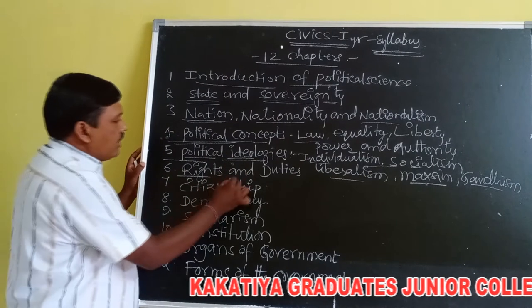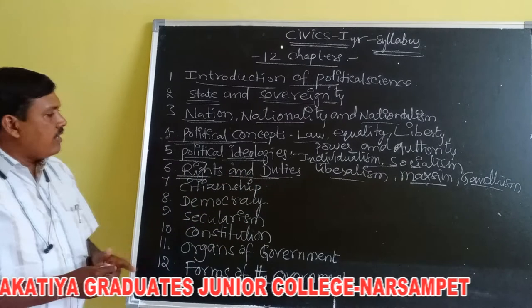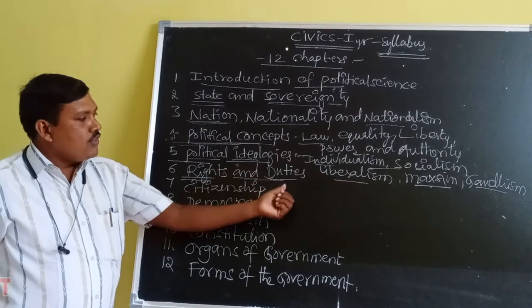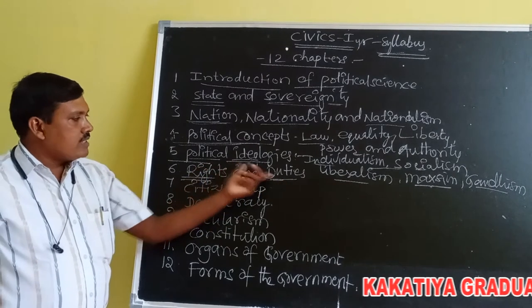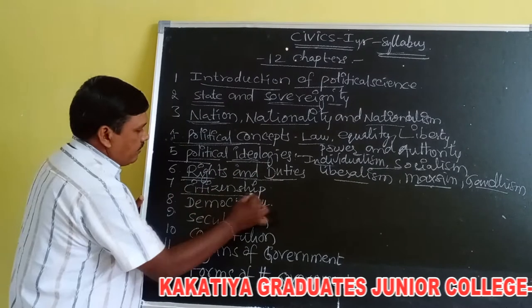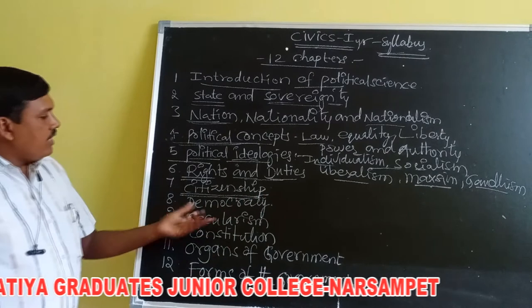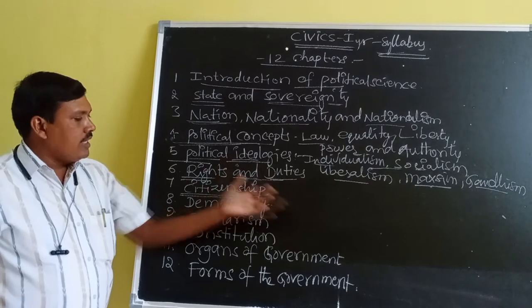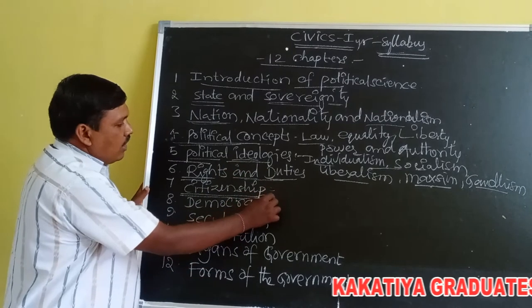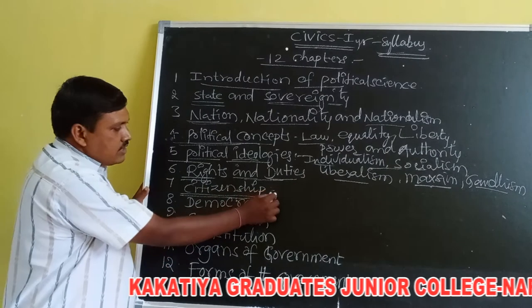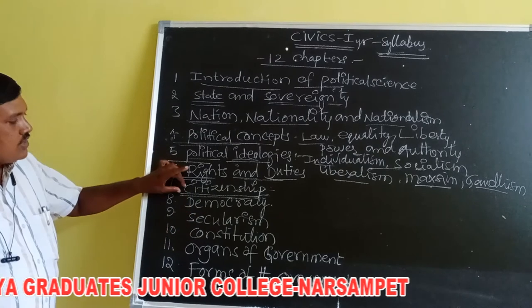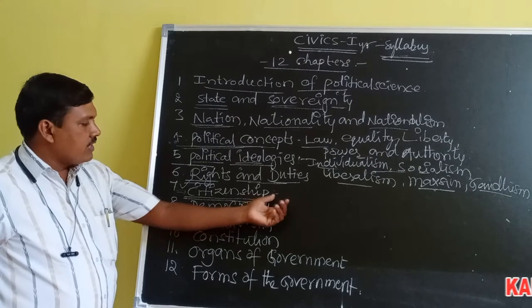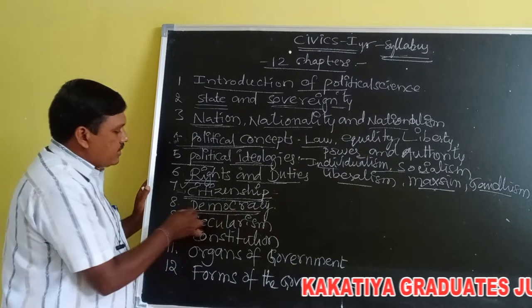The sixth chapter is Rights and Duties. We will learn how many kinds of rights there are, the definition of rights, what duties mean, and the relation between rights and duties. The seventh chapter is Citizenship. We are all living in different countries, so we have citizenship. We will learn what citizenship means, how we acquire citizenship, how many kinds of citizens there are, and how we lose our citizenship.